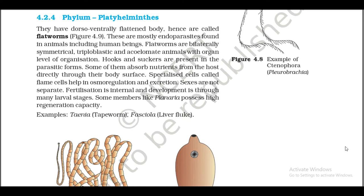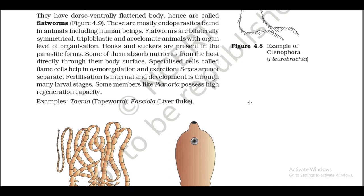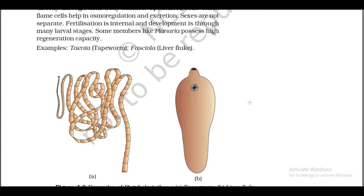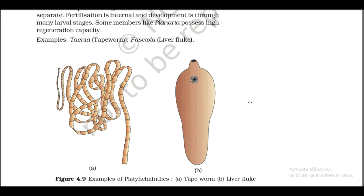4.2.4 Phylum Platyhelminthes. They have a dorsoventrally flattened body, hence are called flatworms (Figure 4.9). These are mostly endoparasites found in animals including human beings. Flatworms are bilaterally symmetrical, triploblastic, and acoelomate animals with organ level of organization. Hooks and suckers are present in the parasitic forms. Some of them absorb nutrients from the host directly through their body surface. Specialized cells called flame cells help in osmoregulation and excretion. Sexes are not separate. Fertilization is internal and development involves a larval stage. Some members like Planaria possess high regeneration capacity.